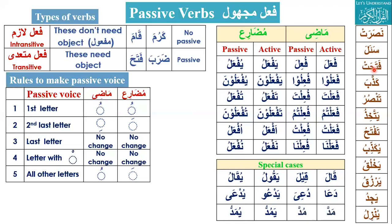Fatahat means 'she opened' — it is feminine gender. Its passive voice is futihat. You know this word: futihat is-sama'u fakaanat abwaaba, from Surah Naba — 'the sky would be opened and it would be like doors.'